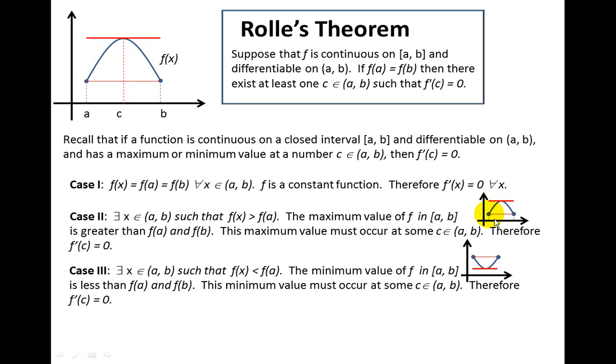The function starts at f(a), it goes up, has to go back down to f(b), so there has to be a maximum in there, and in that case the slope would be zero. The slope of the tangent would be zero. In other words, f'(c) would be equal to zero in that case.